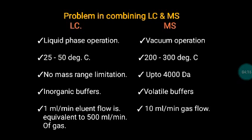In LC, organic buffers are used; in MS, volatile buffers are required since MS deals with gaseous components. Additionally, 1 ml per minute of liquid flow in HPLC is equivalent to 500 ml per minute of gas, compared to a 10 ml per minute gas flow in MS. There is a huge difference in HPLC output and MS inlet, creating technical disadvantages while linking the two.